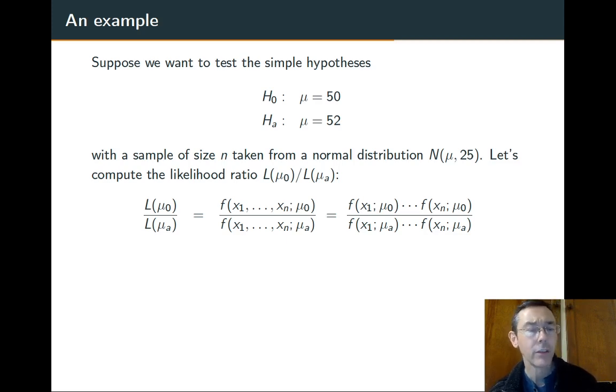Our expectation is that it probably should look like the sample mean is greater than or equal to some value. So let's hope to establish that. We're going to assume that we're sampling from a normal distribution with mean μ and standard deviation 5. Let's actually compute this likelihood ratio.